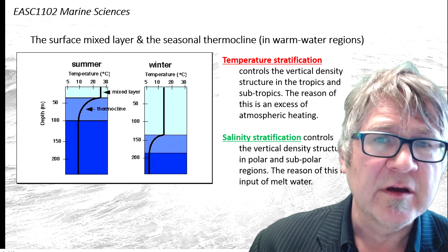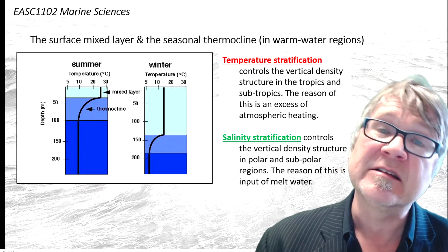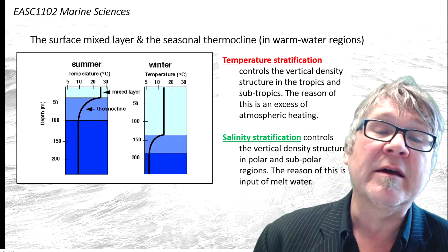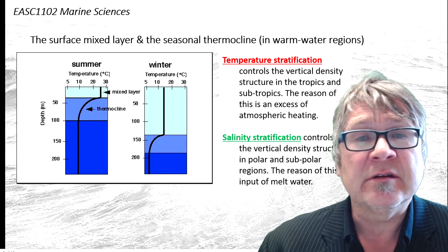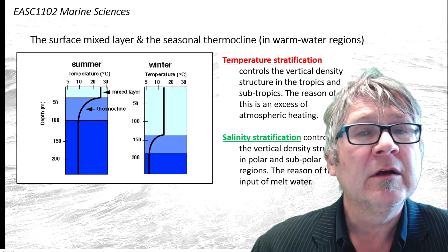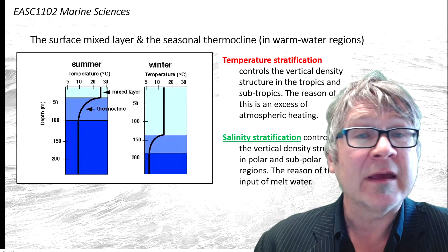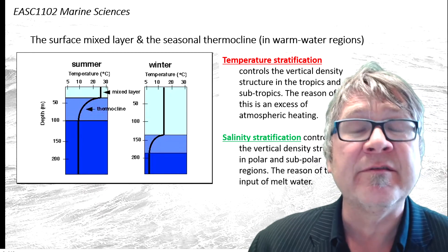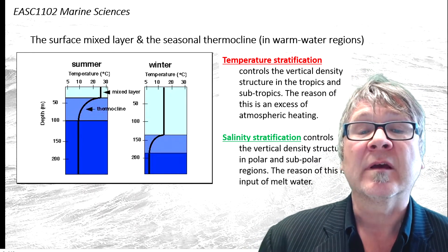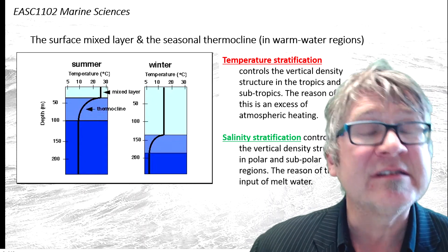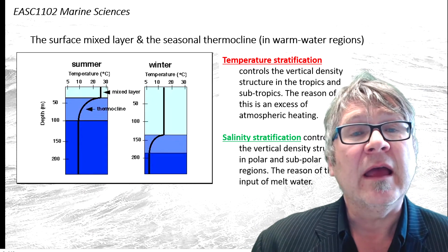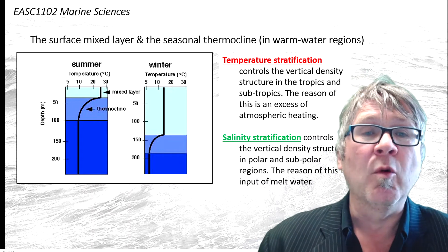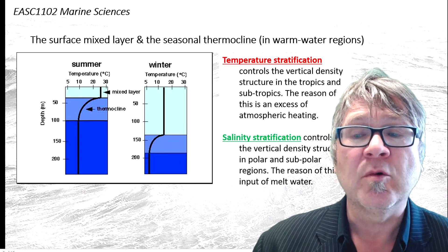This is just a reminder of which properties control the density stratification. In the so-called warm water regions on Earth, temperature controls the density stratification. You have warm water over colder water — it's the excess heating near the surface that controls the density structure in the water column. Features known as the seasonal thermocline and the permanent thermocline are temperature transition zones between the warmer surface water and the colder bottom water.